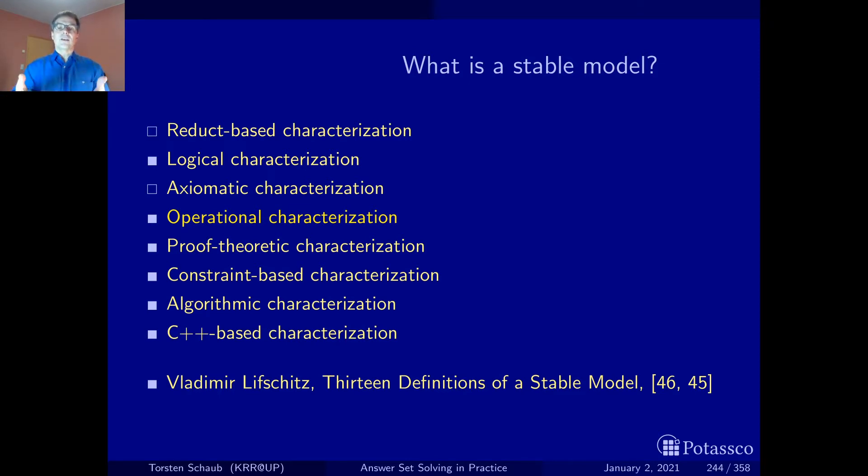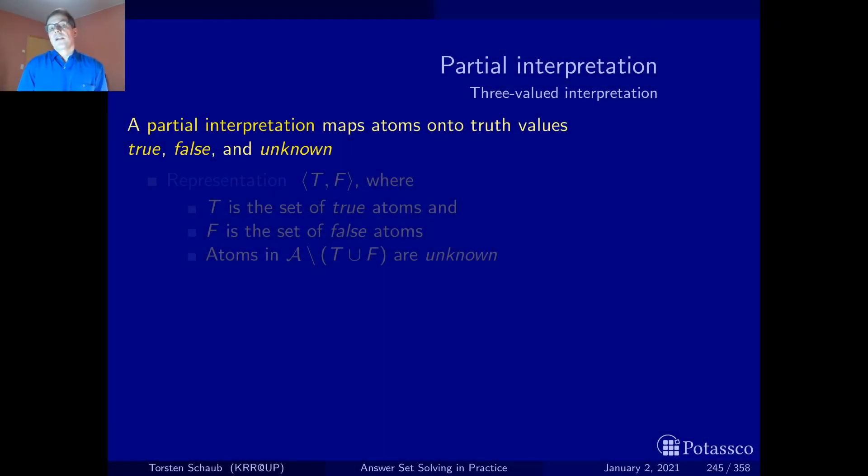We've seen operators but the question is what are these operators working on? At the end we start from nothing. We have an assignment that is empty or where the truth value of each variable is unknown. This brings us to three-valued or partial interpretations.